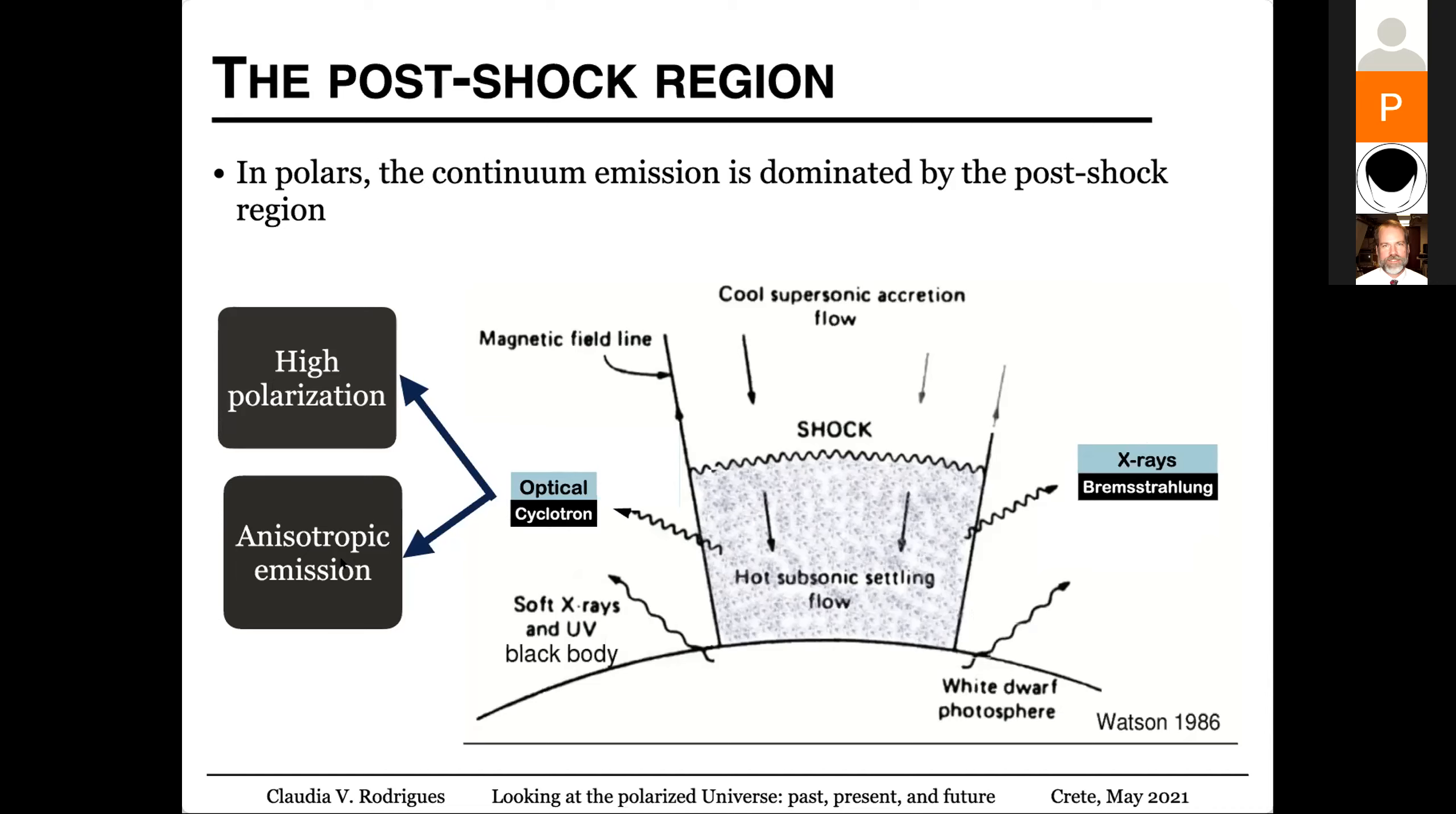So along the white dwarf rotation, you will see a strong modulation of polarization and total flux that can give us hint of what's happening in this region.